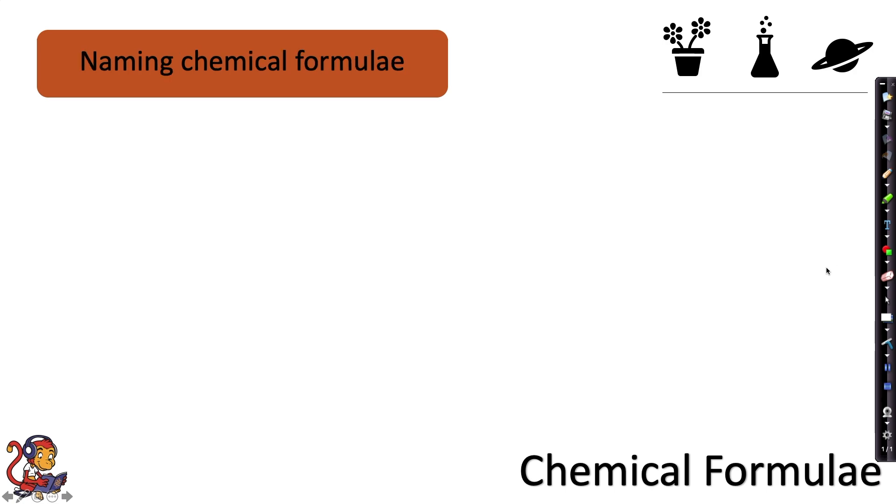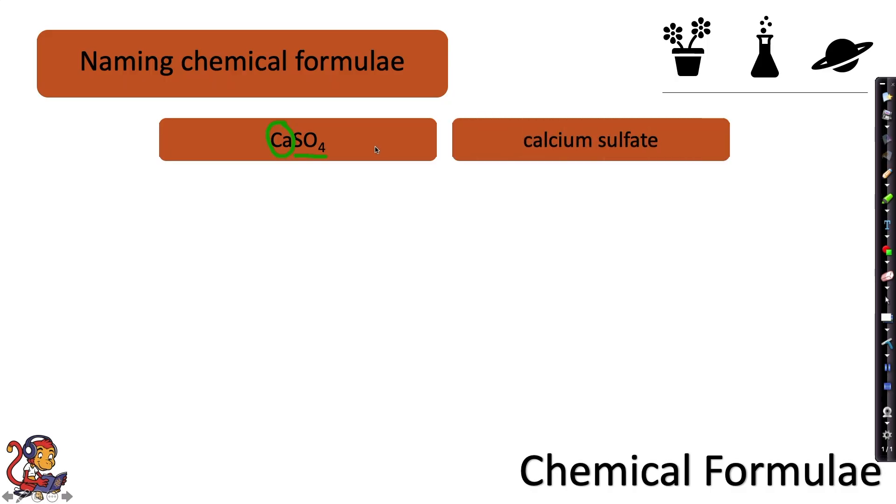Let's look at some examples now. If we were to name this chemical formulae, we would have a look at the metal in front, which is calcium. And we look at SO4, which we've just learnt means sulfate. So this would be called calcium sulfate. The next chemical formulae, we look at the metal. And on the periodic table, if we looked up Na, that would be called sodium. And together with CO3, this compound would be called sodium carbonate.